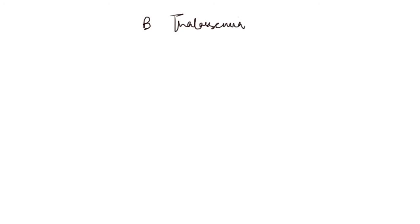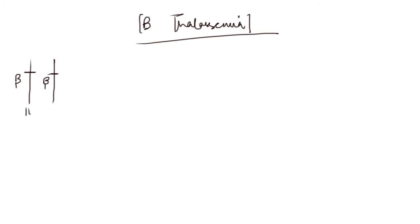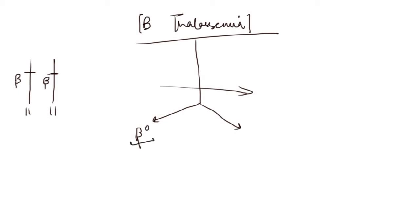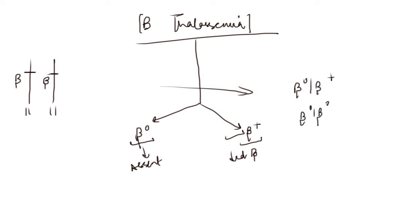Now let's cover the beta thalassemias. In beta thalassemia there is decreased production of beta chains, resulting in decreased hemoglobin and microcytic anemia. The beta chains are produced from 2 beta genes on the 11th chromosome, one on the paternal side and one on the maternal side. In beta thalassemia, inactivating mutations occur: beta-zero, in which beta chain production is absent, and beta-plus, in which beta chain production is decreased.